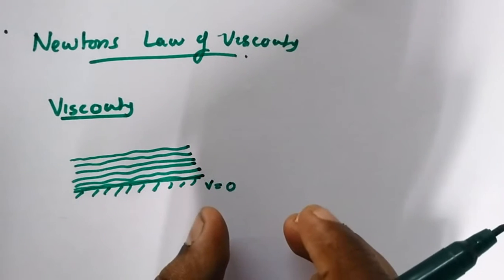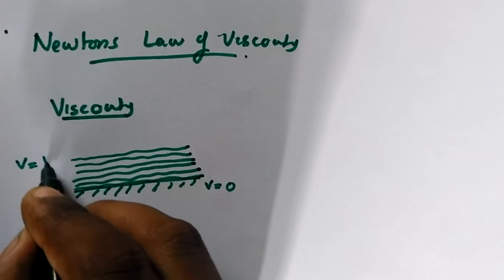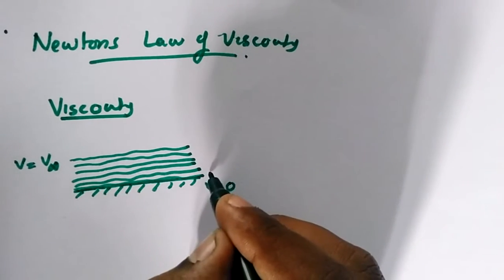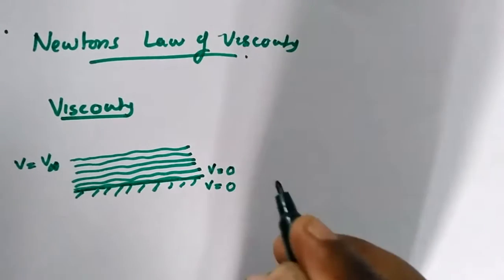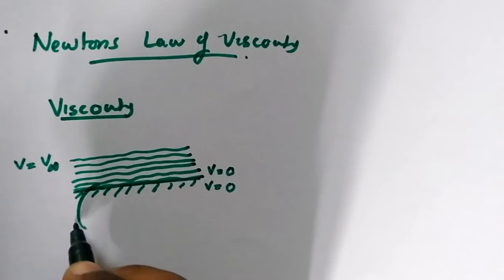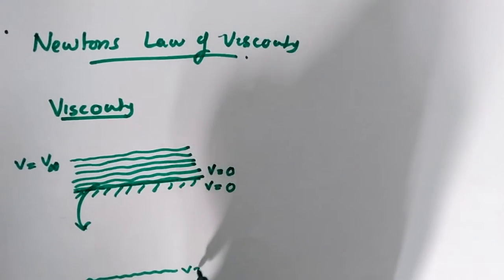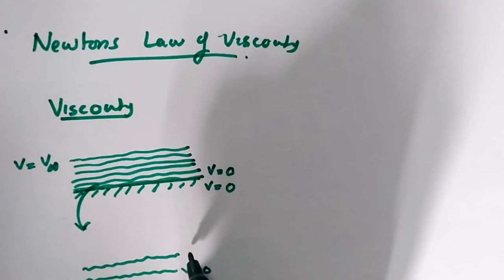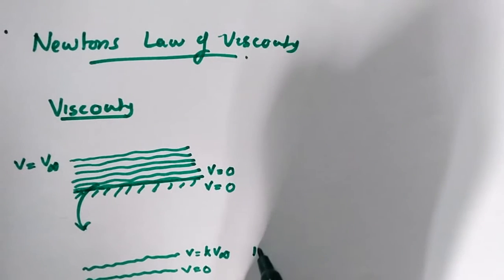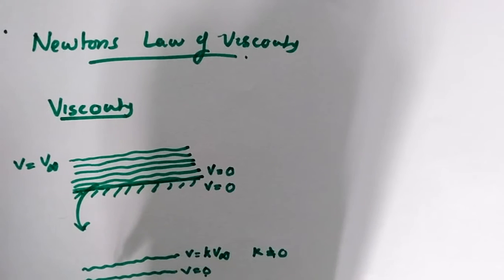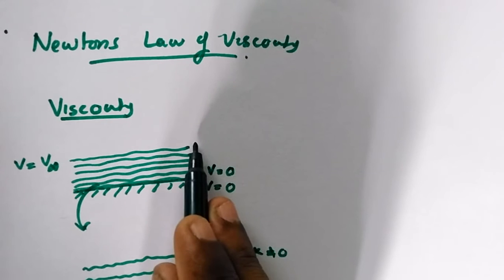The flat plate has a velocity of zero since it is stationary. The fluid layer in contact with the flat plate will also have a velocity of zero — this is the no-slip condition. The next fluid layer just above it will have a higher velocity, equal to some fraction k times V-infinity. There will be a gradual increase in velocity from the contact surface upward to the free stream.